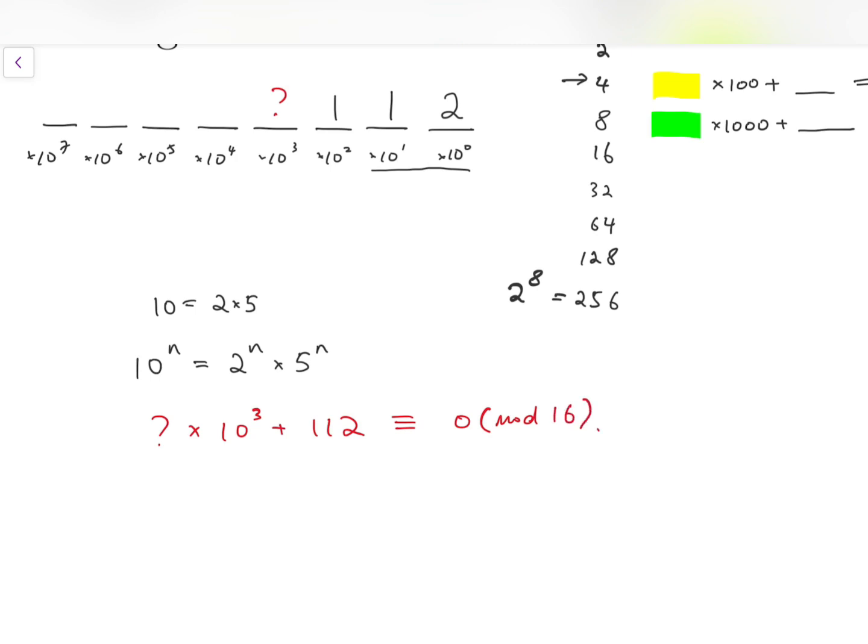Now we need some calculations on this. A thousand is indeed 8 mod 16, because 992 is a multiple of 16, so we have a remainder of 8. So we have the question mark times 8 plus—in fact we have 0 here, because 112 is 7 times 16, so we have 0 equals 0 mod 16.